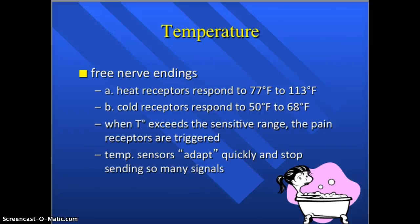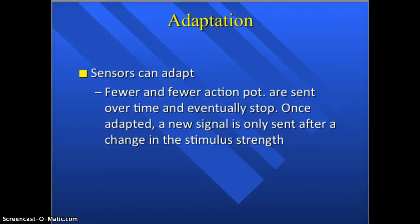When you are in an environment of a specific temperature for a while, your temperature sensors adapt — they stop sending so many signals so that you don't feel the sensation of cold or warm. This is why if you jump into a really cold swimming pool or a really hot bathtub, over time you become comfortable because your receptors stop sending signals. That's adaptation: fewer and fewer action potentials are sent and they eventually stop, so you're no longer smelling that smell, feeling that pain, or feeling that temperature.